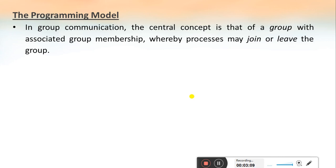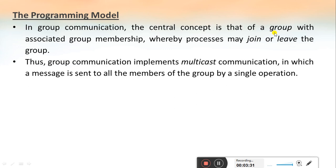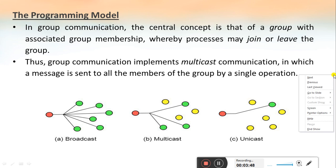In the programming model of group communication, the sender sends the message to a particular group and the group delivers it to all members. The central concept of group communication is a group with associated group membership, so that any process can join or leave the group. Group communication is implemented using multicast communication, where the message is sent to all members of the group by a single operation.